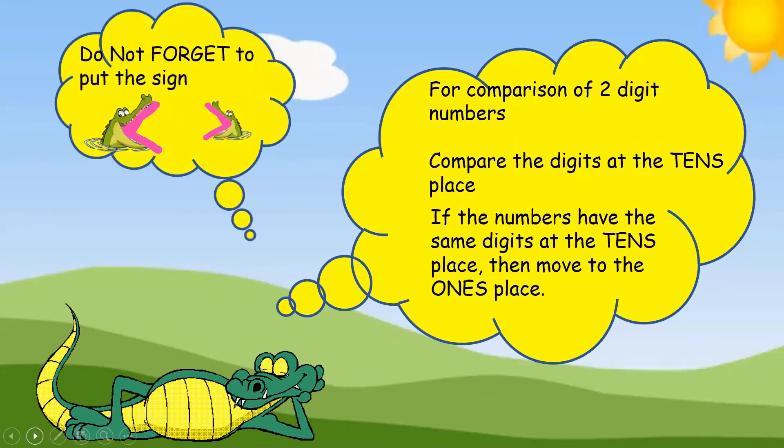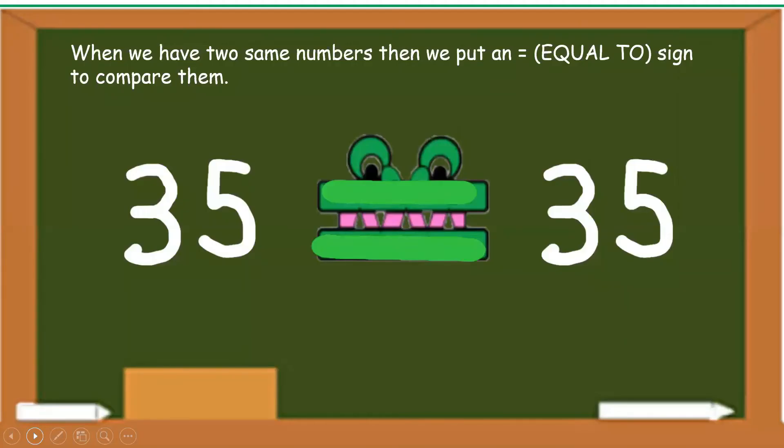And do not forget to put the sign. Now, what do we do when we have the same numbers on both the sides? It is again simple. Crocky is in confusion. So, he gives an equal to sign. Here, 35 is equal to 35.